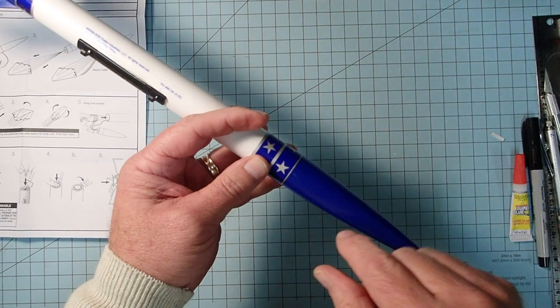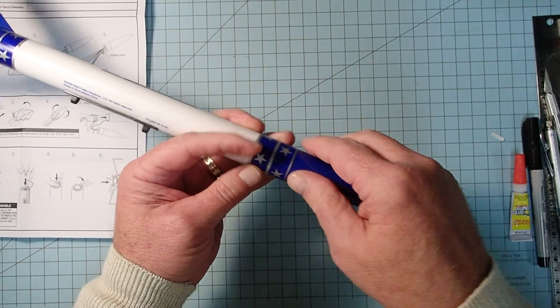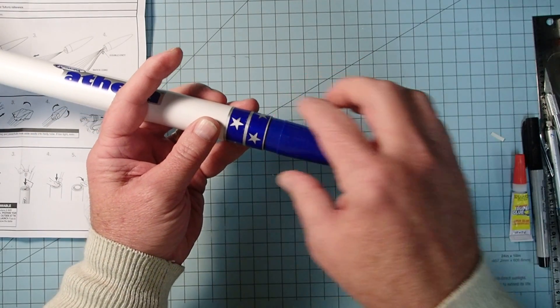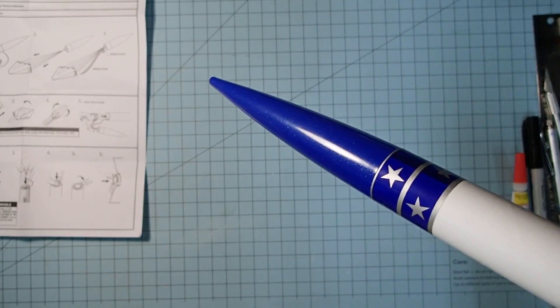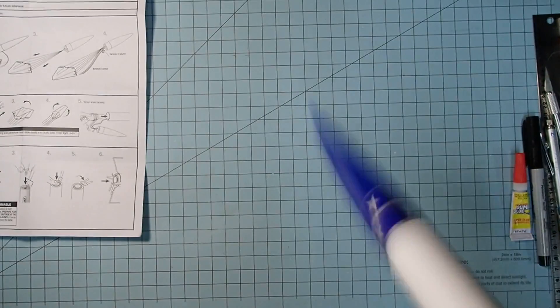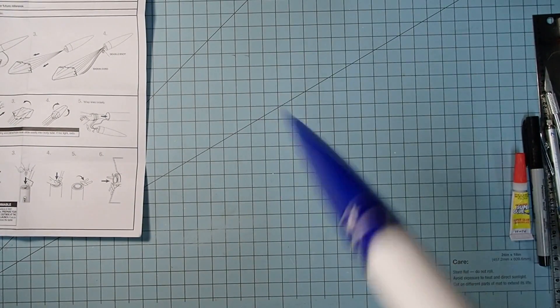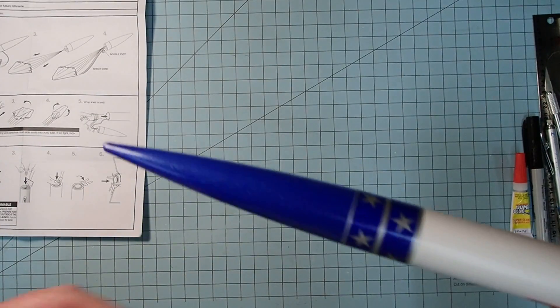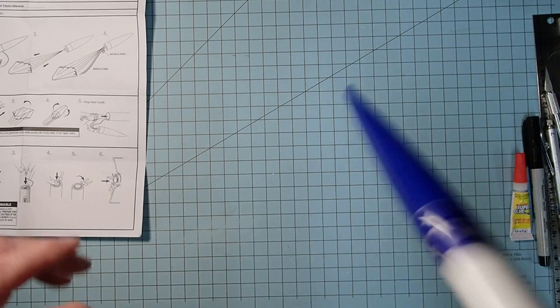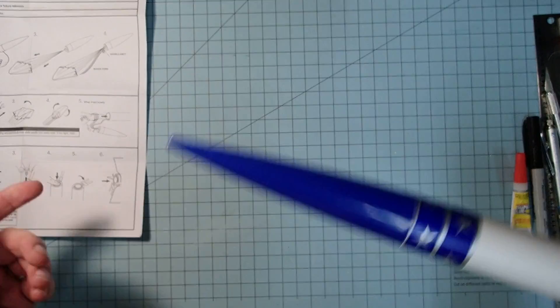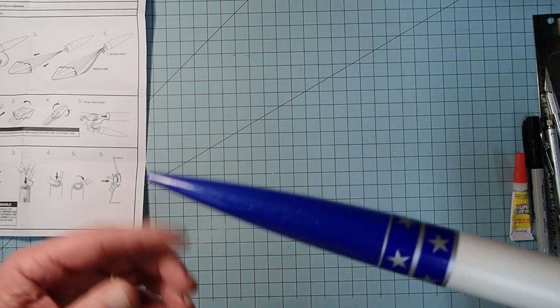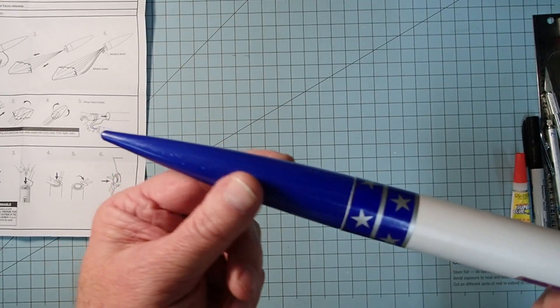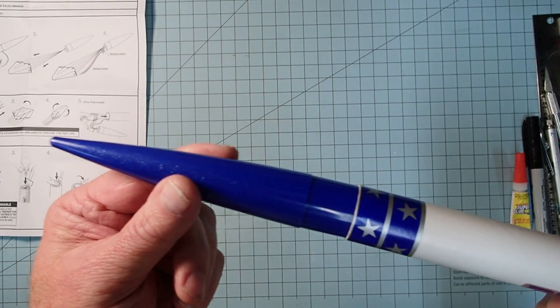If it's jamming, that usually means you've either got the shock cord or some shroud lines in between the shoulder and the body tube there. Once the nosecone is properly in place, then go ahead and give it a shake like this. And if it comes out, then we need to add a little bit of masking tape to the shoulder here. Mine seems to be doing pretty well. So what you want is something that won't shake itself out really easily, but also is loose enough that you can pull this out with just a little bit of tension on it.